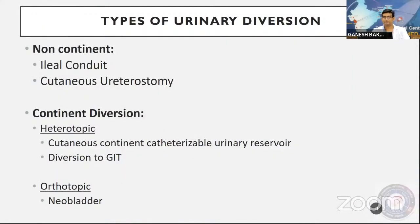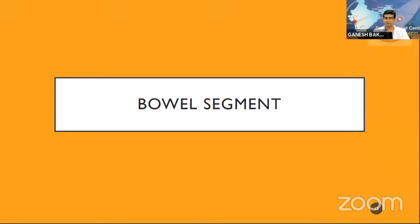The types of urinary diversion: non-continent, which is an ileal conduit or cutaneous ureterostomy; continent diversion of two types — heterotopic, which includes cutaneous continent catheterizable urinary reservoir or diversion to the GI tract; and orthotopic, which encompasses various forms of neobladders.